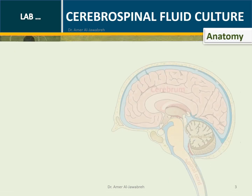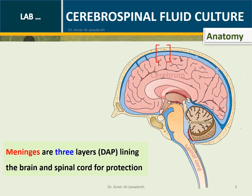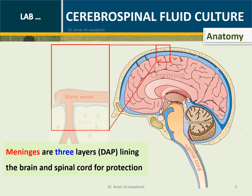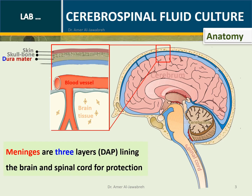Anatomy. Meninges are the three layers outlining the brain for protection, abbreviated DAP: Dura mater, Arachnoid, and Pia mater.